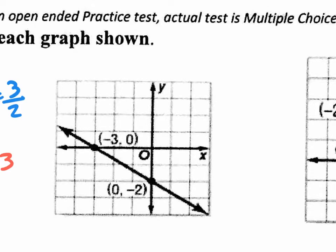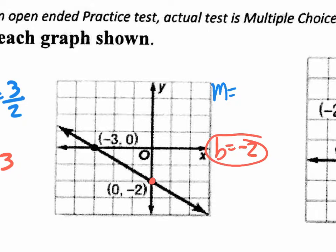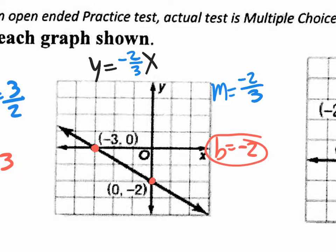Let's find the slope and the y-intercept for this next graph. Starting with the y-intercept — it crosses at negative 2. Let's find the slope by comparing two suggested points. From this point to that point, left to right, it's going down — so we know it's a negative rise. It goes down 1, 2 units. The run is 1, 2, 3 units. So the slope is negative 2 over 3. Y equals negative two-thirds x minus 2.